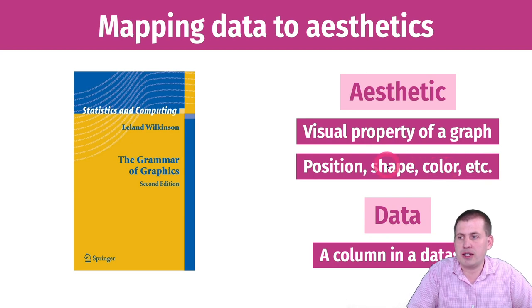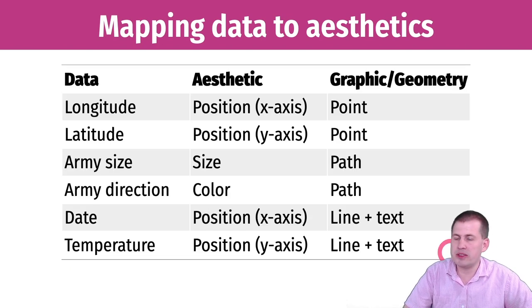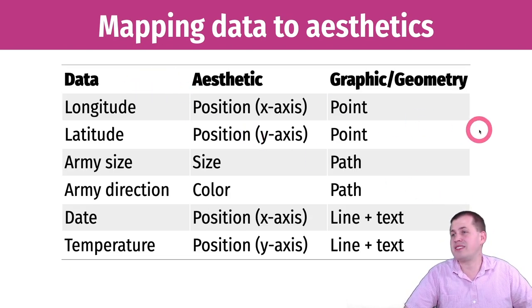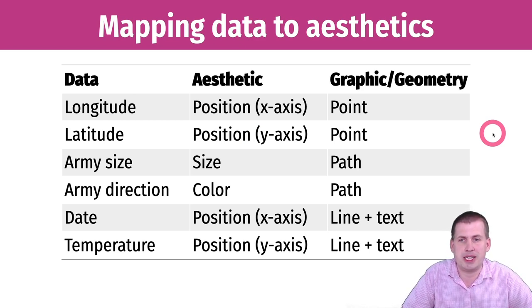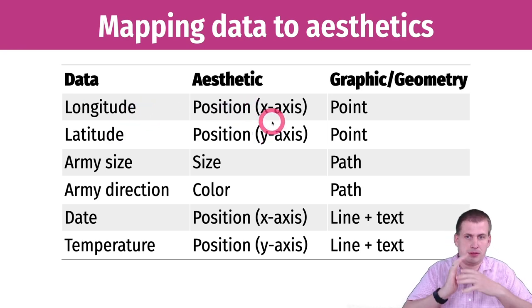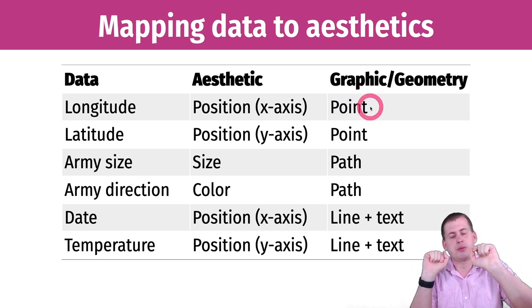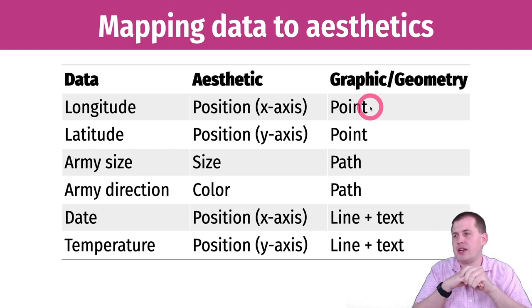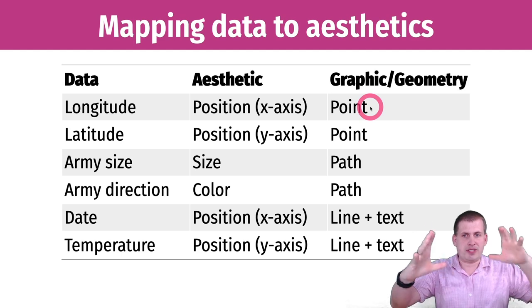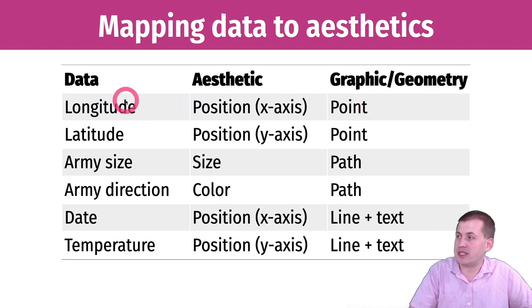Aesthetics are things like position (x-axis, y-axis), shapes, colors, and sizes — that get mapped onto specific values in a data set. As long as you have that mapping, you can represent data on a graph. With the Minard plot we have six different variables all being represented simultaneously through different aesthetics and geometric elements. Longitude and latitude map to the x- and y-axes, represented by points and text so you can actually see where the cities are and trace the path.